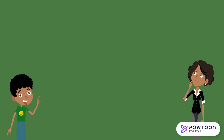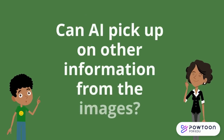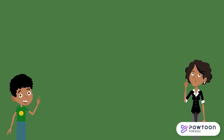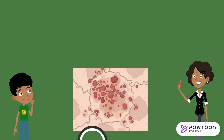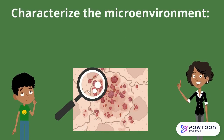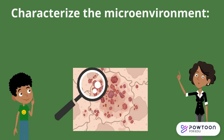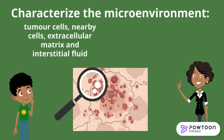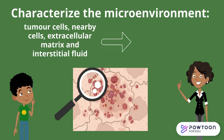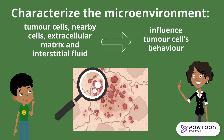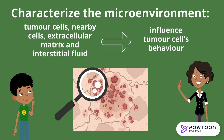I'm curious to know if AI can also pick up on other information from the images. Good question! AI can be used to characterize the tumor's microenvironment. This is made up of the tumor cells, nearby cells, extracellular matrix, and interstitial fluid. These can all interact with the tumor cells, influence their phenotype, as well as determine how the tumor will evolve, move, or respond to therapies.